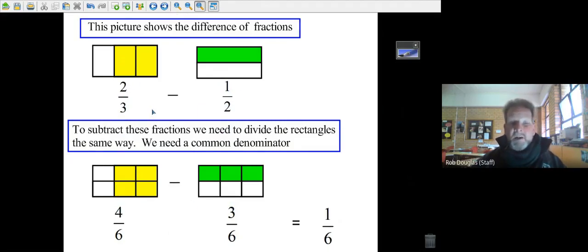Looking at subtraction, it's exactly the same way. If we had two-thirds minus one-half, we'd still need a common denominator. We break both rectangles into six parts. Four minus three equals one. Three times two gives six on the bottom, and cross multiplying gives two times two minus three times one.